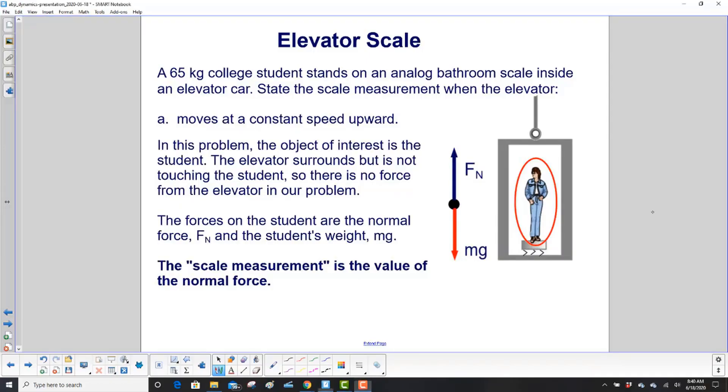This problem is very similar to the tension in the cable for the elevator problem. But what's different? What's very different is the object of interest. The elevator this time surrounds but is not touching the student, so there is no force from the elevator in our problem. What forces do we have on the student? The student is standing on the spring scale here, which is pushing the student up. And we have gravity. Gravity is acting on the student, which is pulling the student down.